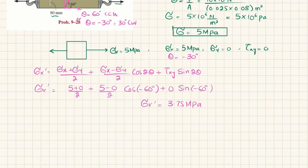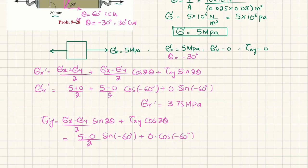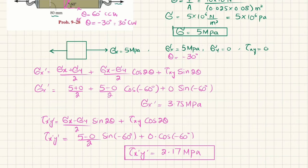Now we find the shear stress parallel to the weld. The formula is: τx'y' = −(σx − σy)/2 · sin(2θ) + τxy · cos(2θ). Substituting: −(5 − 0)/2 · sin(−60°) + 0 · cos(−60°). When calculated, the transformed shear stress comes out to be 2.17 MPa.